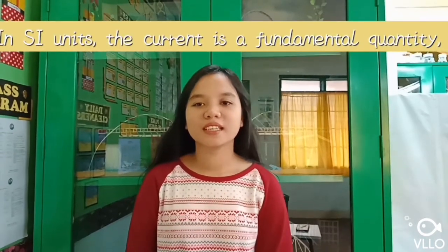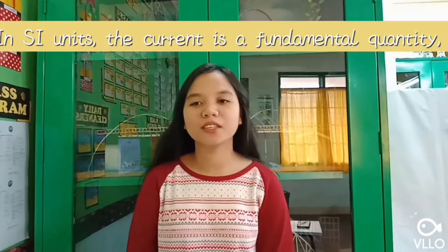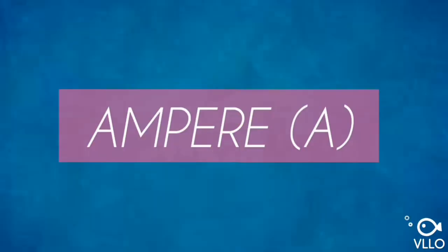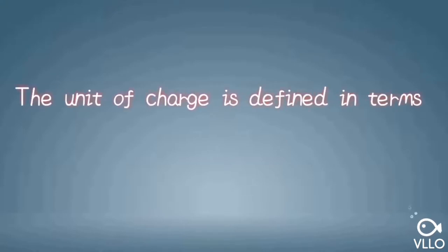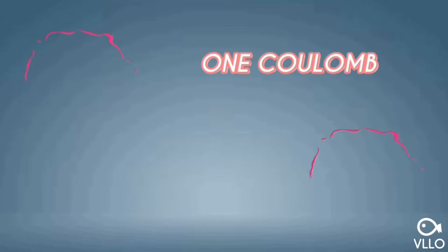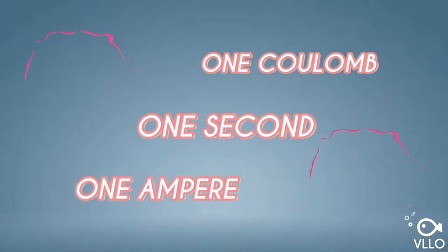In SI units, the current is a fundamental quantity having a unit of ampere. The unit of charge is defined in terms of the unit of current. Thus, one coulomb is the charge transferred in one second across a section of a wire carrying a current of one ampere.